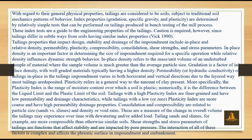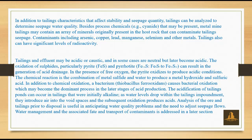Consolidation and compressibility are related to particle size — sands versus slimes — and density or void ratio. These are a measure of the change in overall volume the tailings may experience over time with dewatering or added load. Shear strength and stress parameters of tailings are functions that affect stability and are impacted by pore pressure. The interaction of all these factors is complex and affects the phreatic surface in the impoundment and embankment.